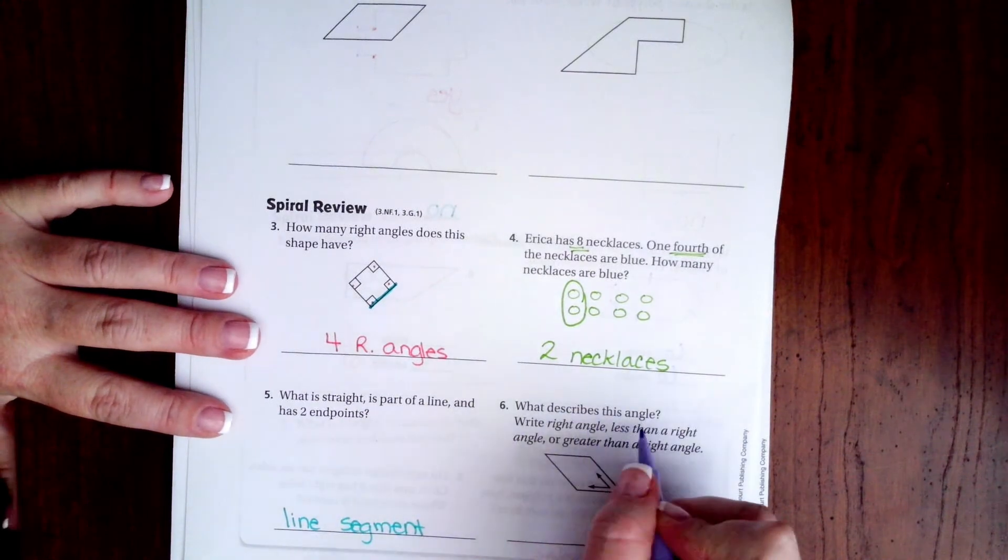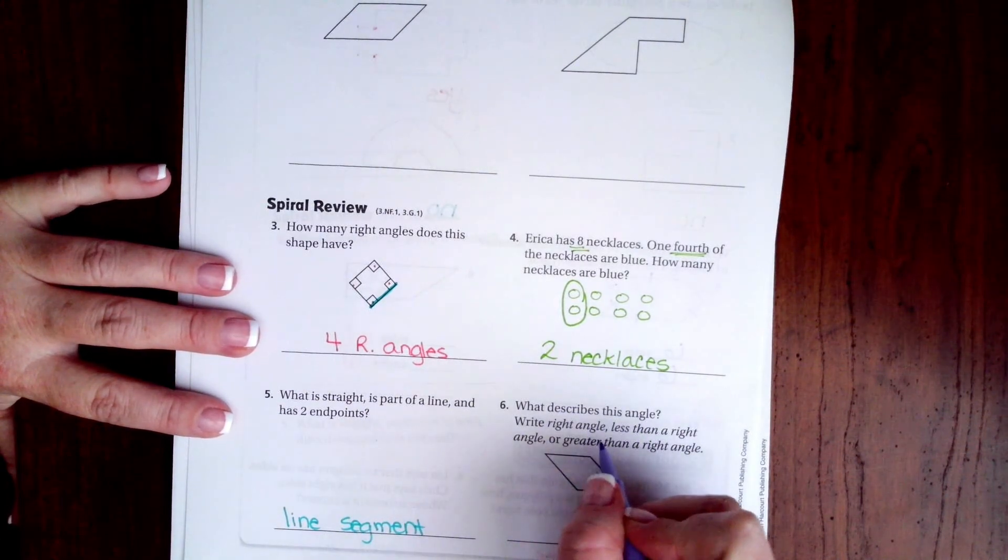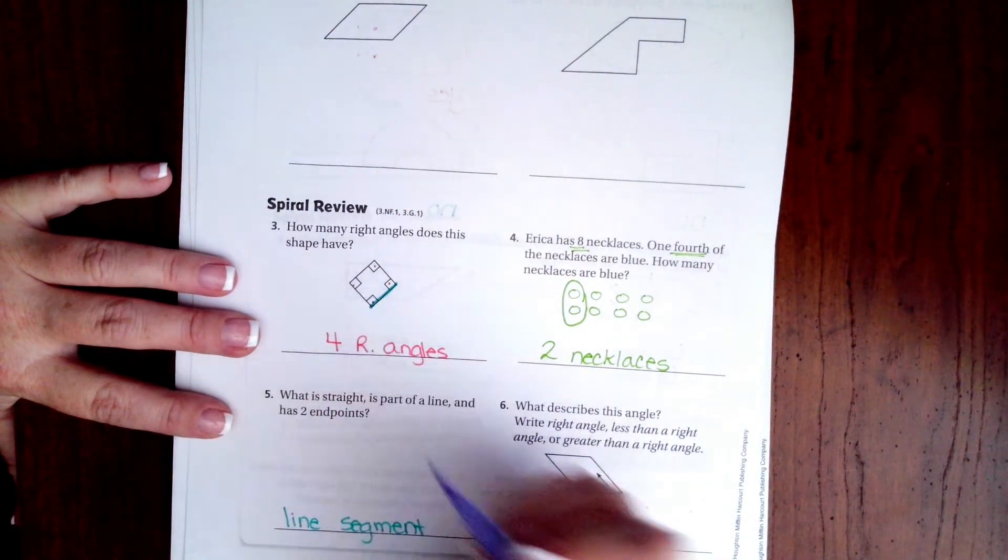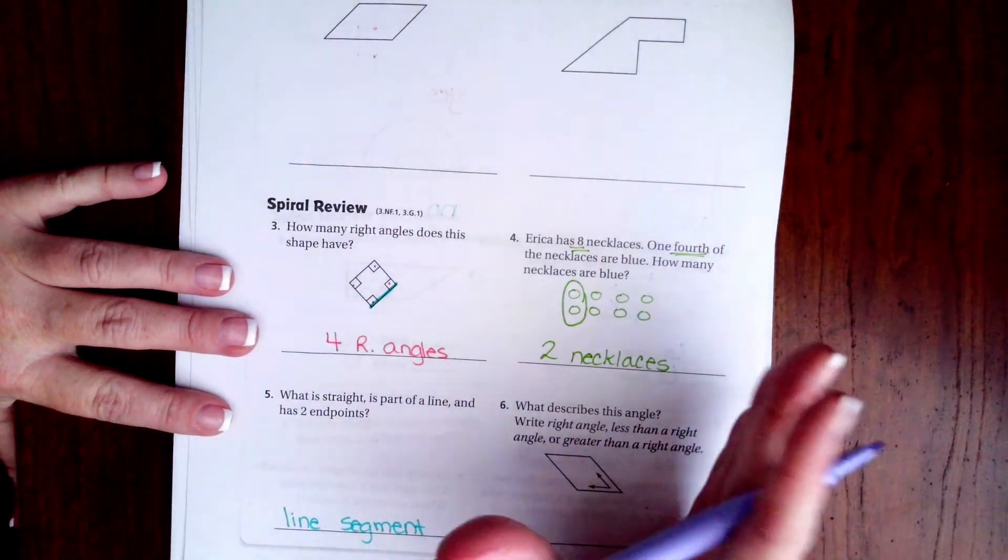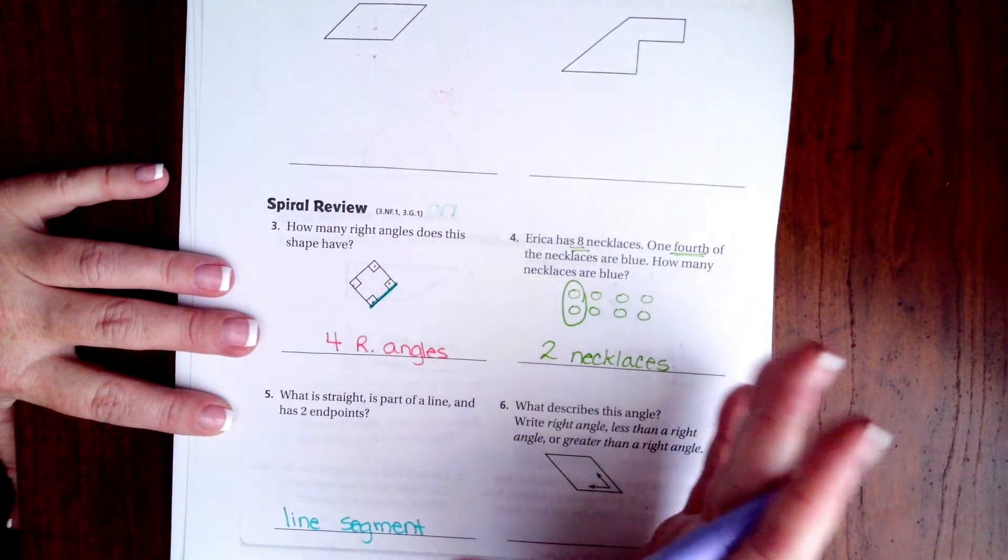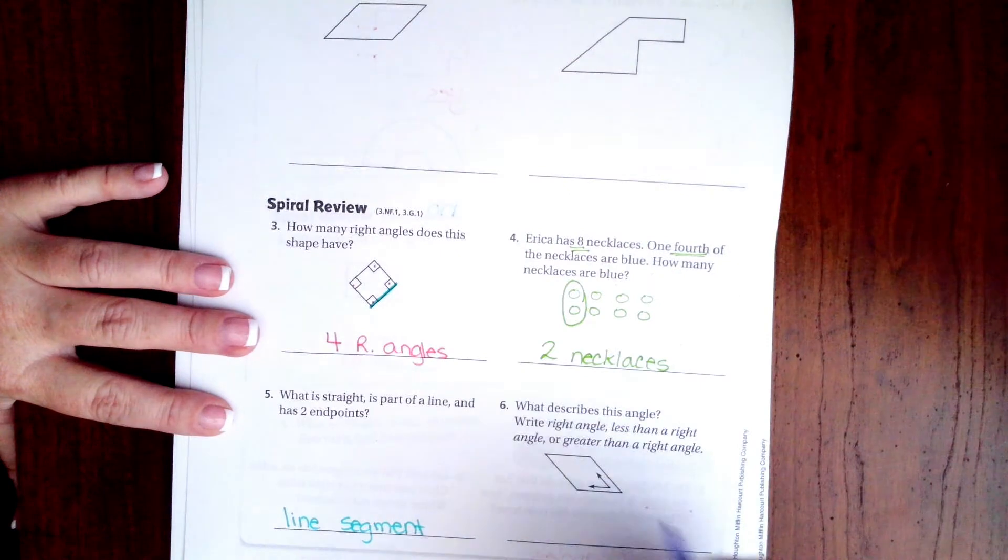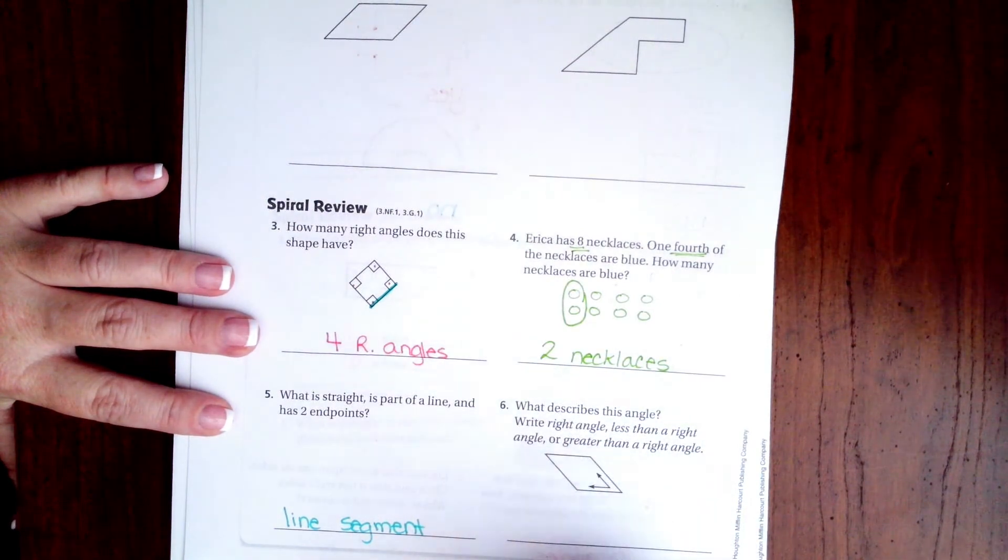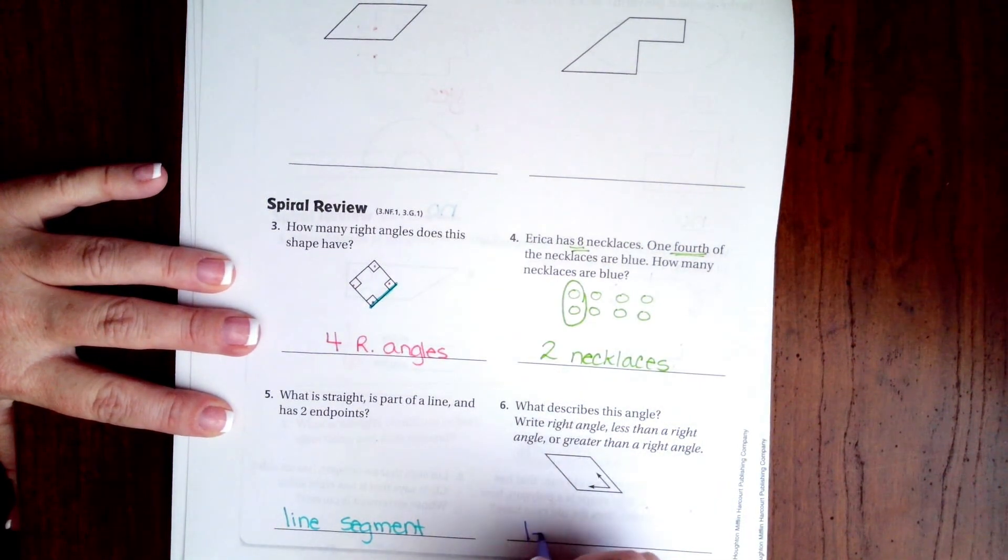What describes this angle? Is it a right angle, which means it would have a box which it doesn't? Is it less than a right angle or is it more than a right angle? Well, that is much smaller than an L, so it is going to be less than.